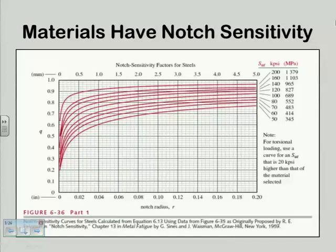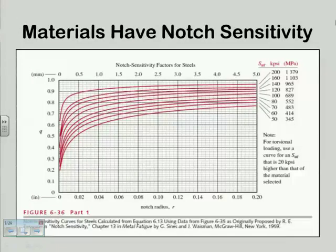It varies with the material. The ones that plunge deepest — really making a big reduction in the effect of stress concentration — are the low-strength steels. As I go up in strength, which involves a trade-off of ductility in steel — you make it stronger, you lose some ductility — as I go up in strength I go down in ductility, and my notch sensitivity increases.